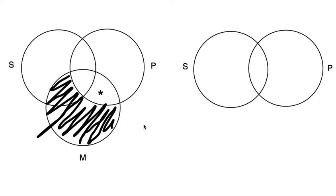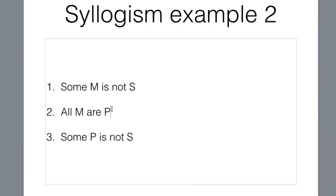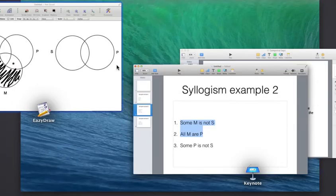So there is the correct way to diagram these premises: Some M is not S, and all M are P.